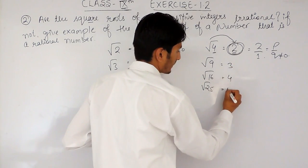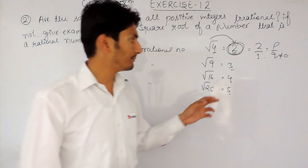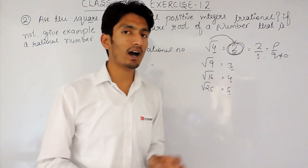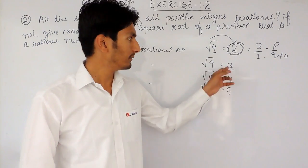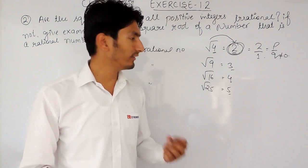All these numbers are rational numbers because we already discussed in the previous video that integers are known as rational numbers. This can be written as 3 by 1 in the form of p upon q where q is not equal to 0.